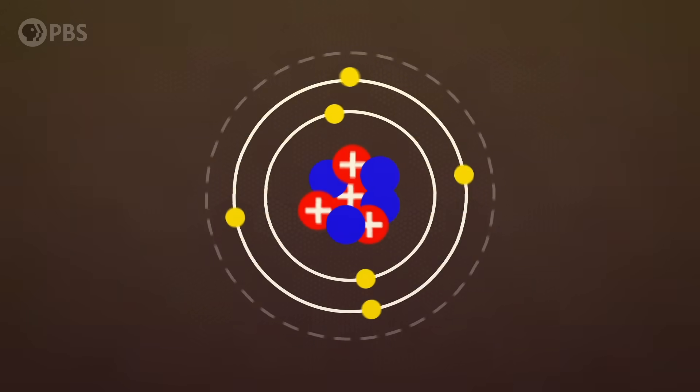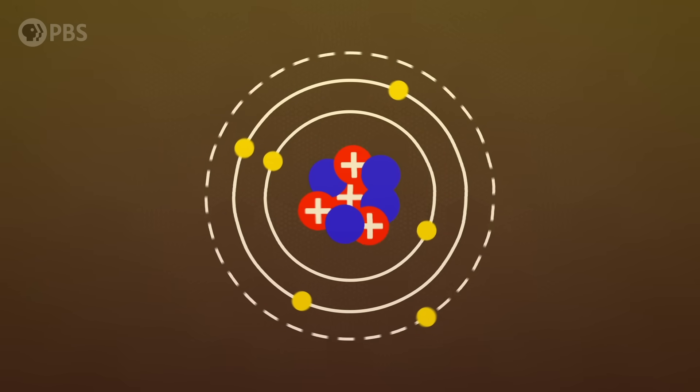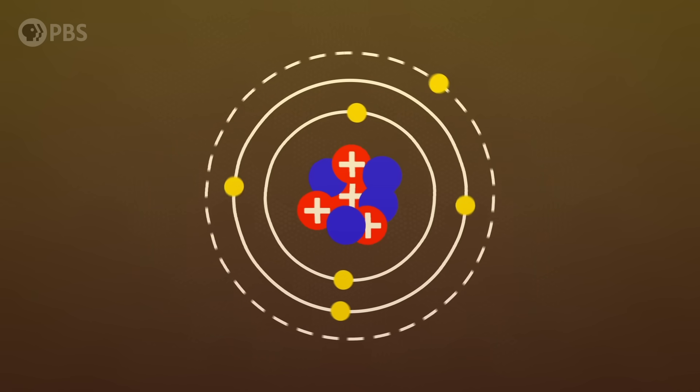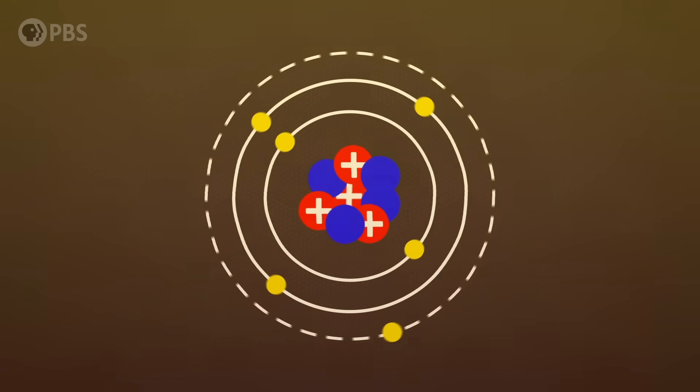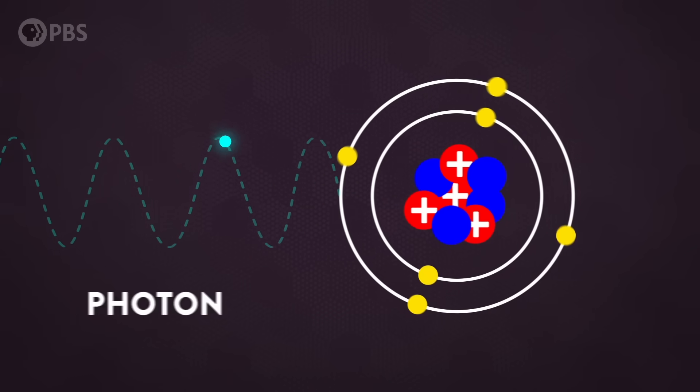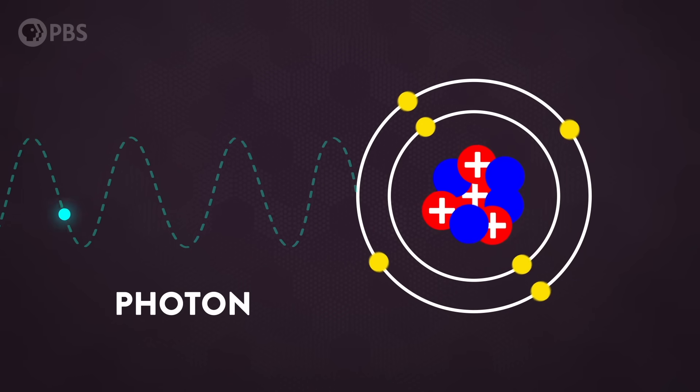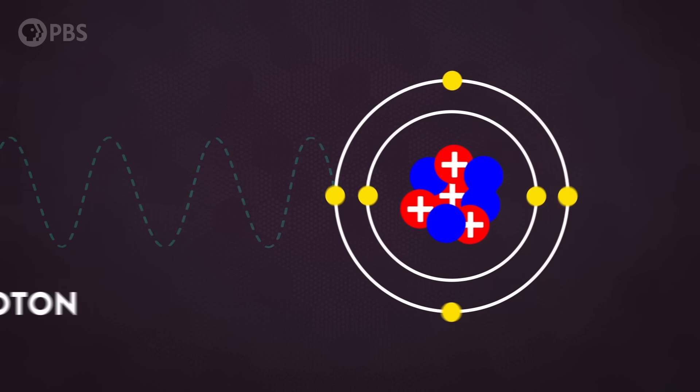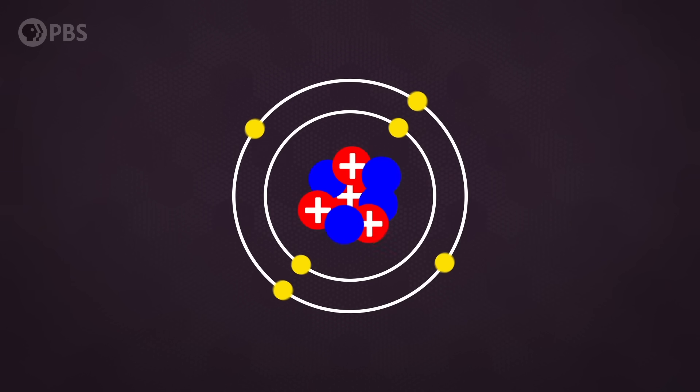But add energy, say by heating things up, and some electrons will start jumping up to higher energy states. These higher energy states are unstable though, so electrons quickly start jumping back down. And each time one returns to the ground state, it releases a photon of a very specific wavelength, carrying the exact same amount of energy that it took to bump the electron up in the first place.